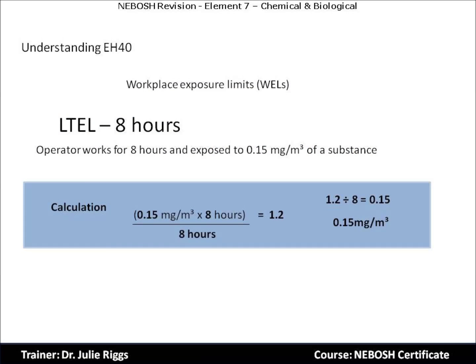Let's look at a calculation for a long-term exposure limit. The example used is an operator who works for eight hours and is exposed to a substance of 0.15 milligrams per cubic metre. The calculation is: 0.15 mg/m³ multiplied by eight hours equals 1.2, then divided by eight hours, which gives us 0.15. So the answer in this case is 0.15 milligrams per cubic metre.